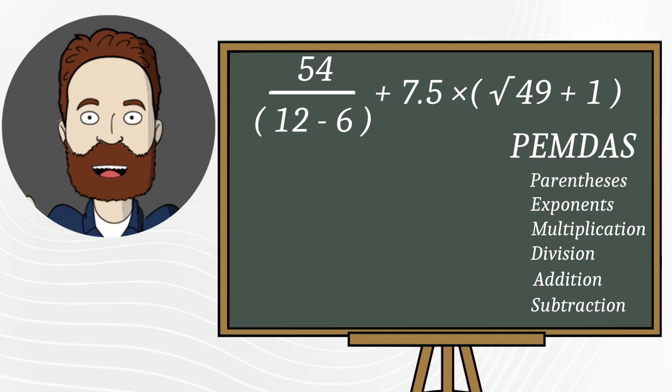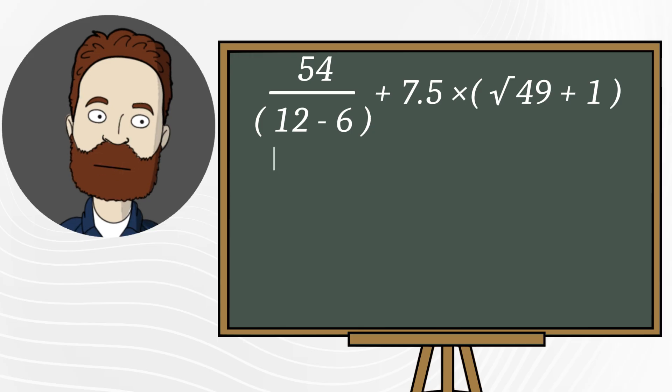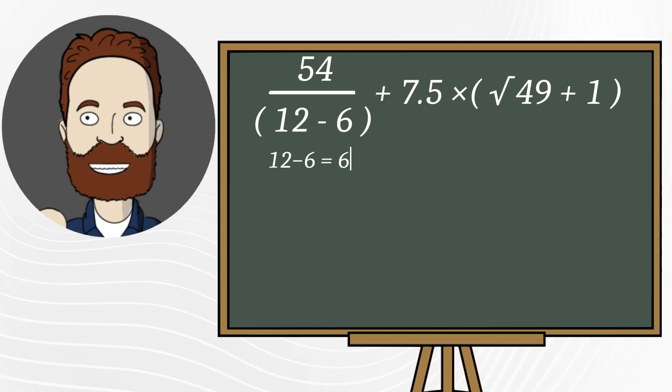So, let's go from left to right and solve step by step. First, inside the parentheses, 12 minus 6 equals 6.